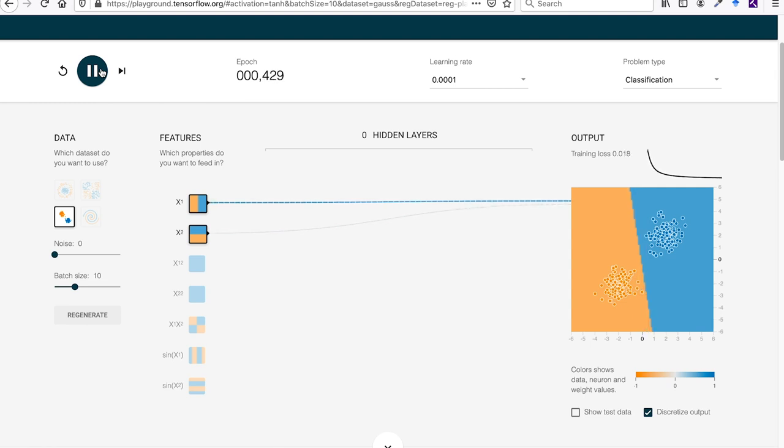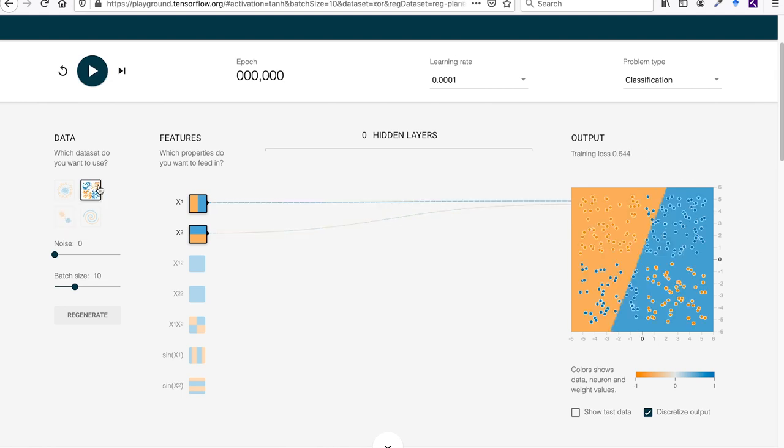We should note that this demo doesn't actually use the loss function of least squares loss. It uses a version of logarithmic loss, but the basic principle is the same. We can see also that if we select a dataset that cannot be classified linearly, this search algorithm doesn't know what to do and sort of moves around in this space without ever landing on a definitive choice.